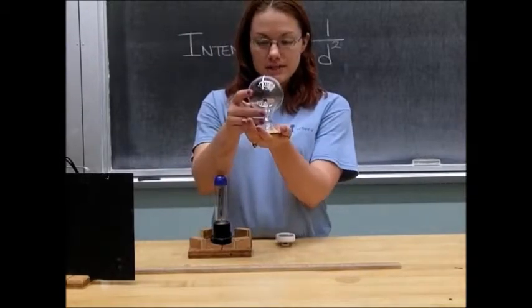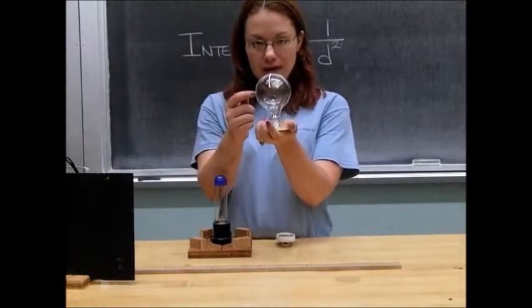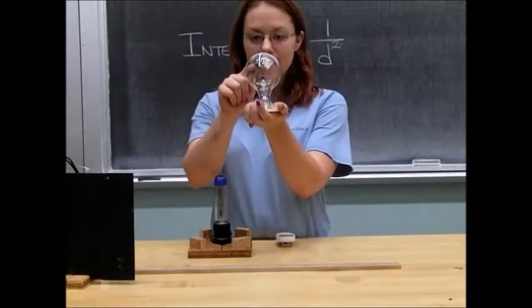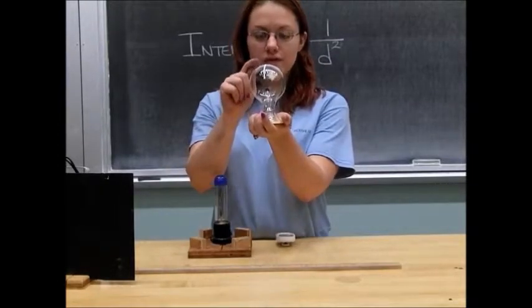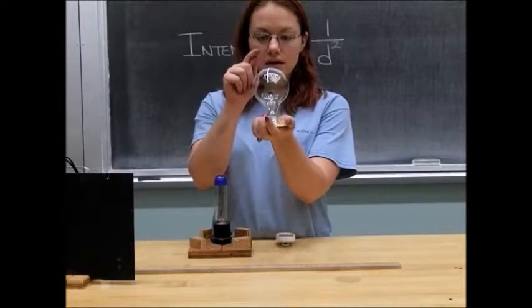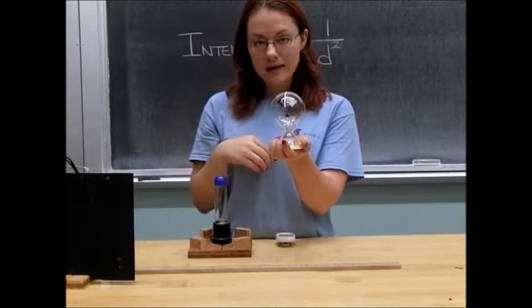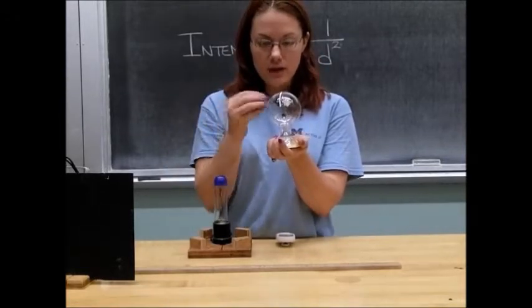The Crookes radiometer is a device that has a partial vacuum within the glass envelope. Inside the envelope is a set of vanes that is mounted on a pivot that is allowed to rotate in response to an incoming flux.